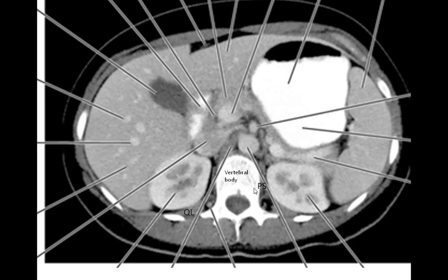In front of the muscular layer we have the big blood vessels of the abdomen — the abdominal aorta and the IVC. The IVC lies to the right of the abdominal aorta. The next thing to think about is the portal vein. The portal vein lies in front of the inferior vena cava, which you can see there.